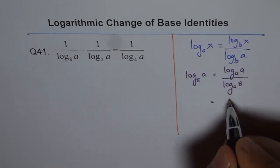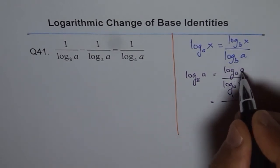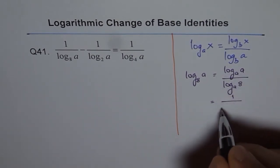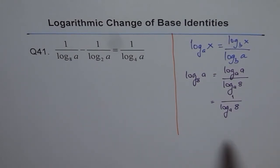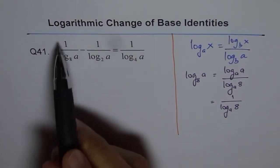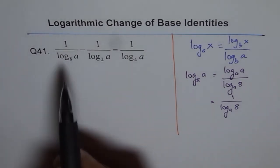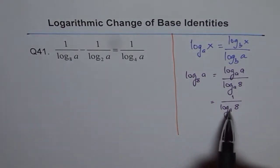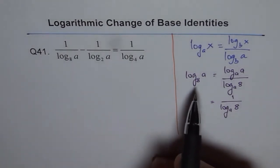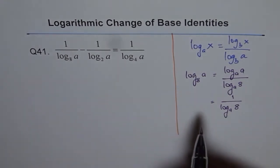Now you will see log base a of a is 1, so you get 1 over log base a of 8. Therefore, we can write 1 over log base 8 of a as log base a of 8—kind of a reciprocal. Do you see that?